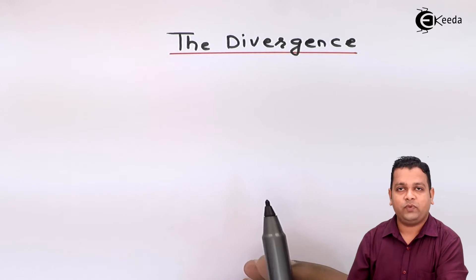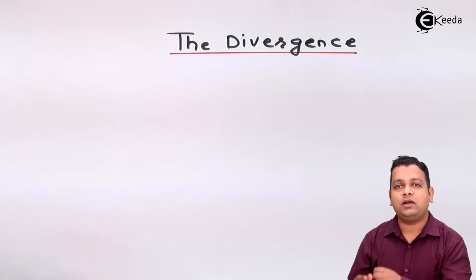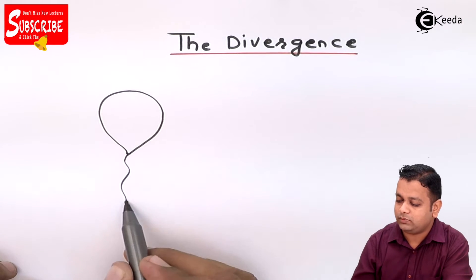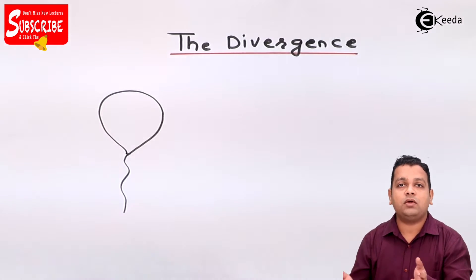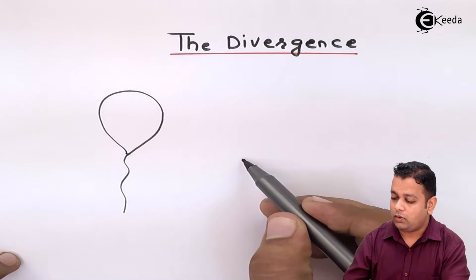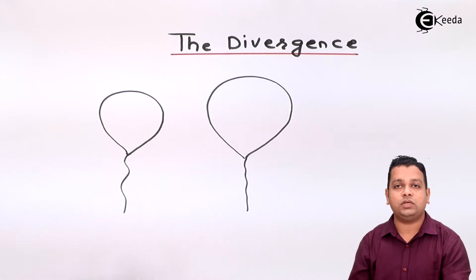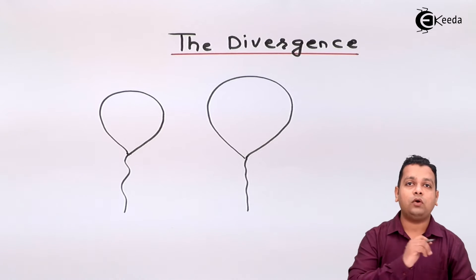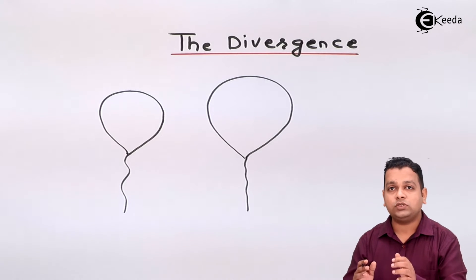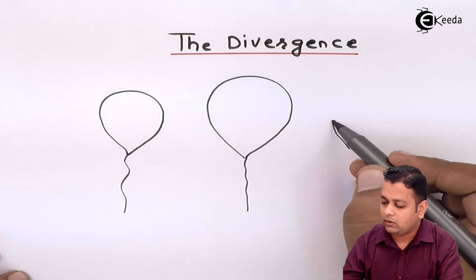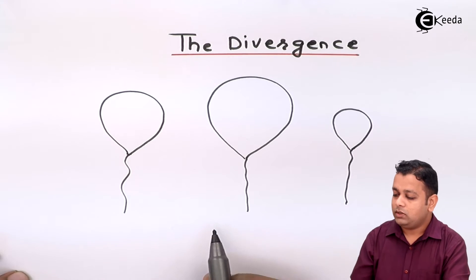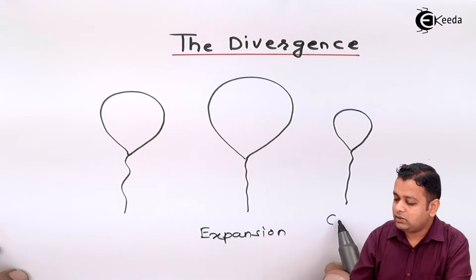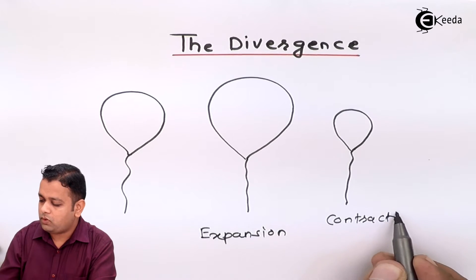So the term is divergence. For understanding the divergence, let us take the example of a balloon. So now if we add some more air to the balloon, the size of the balloon increases — this is actually expansion, the volume has been increased. Whereas if we allow the air from this balloon to pass out, the size of the balloon will decrease. So this case is called as expansion and this case is called as contraction.